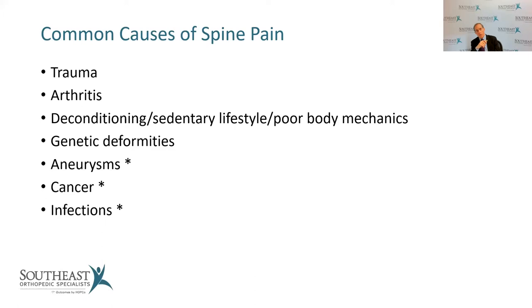Those are things we really look for to screen prior to initiating any treatment, and a lot of our studies are geared toward that if there's a significant history or we see clinical symptoms consistent with that. Aneurysms are areas of expansion of the blood vessels, and they can burst. The fellow Mr. Ritter, from Three's Company years ago, had chronic back pain which turned out to be an aneurysm. He subsequently died from that.